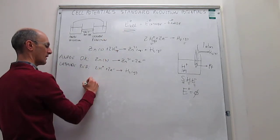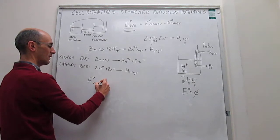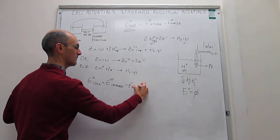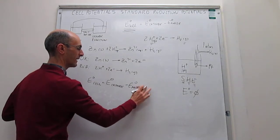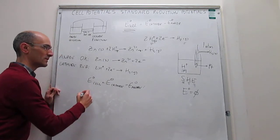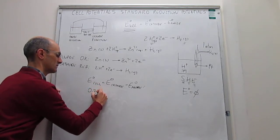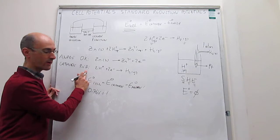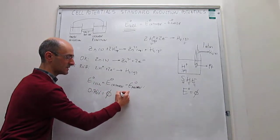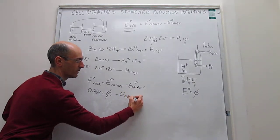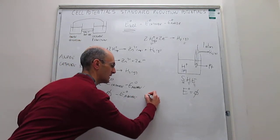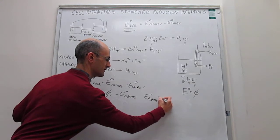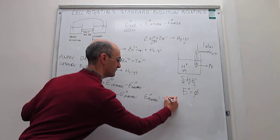Using the expression E_cell = E_cathode − E_anode, the measured cell potential in this case is 0.76 volts. Since the cathode is the SHE with a potential of zero, we get: 0.76 = 0 − E_anode, which means the potential of the anode (based on oxidation of zinc) equals −0.76 volts.